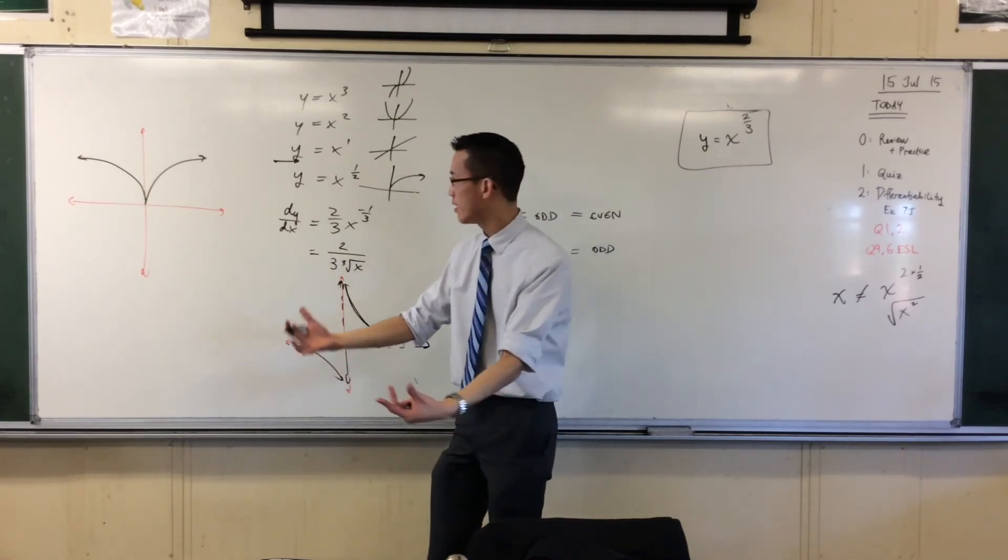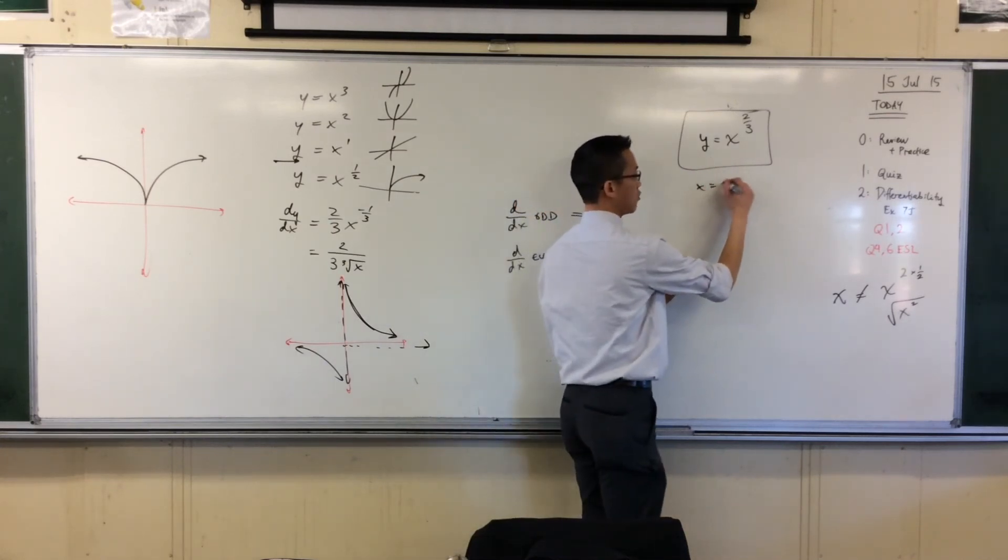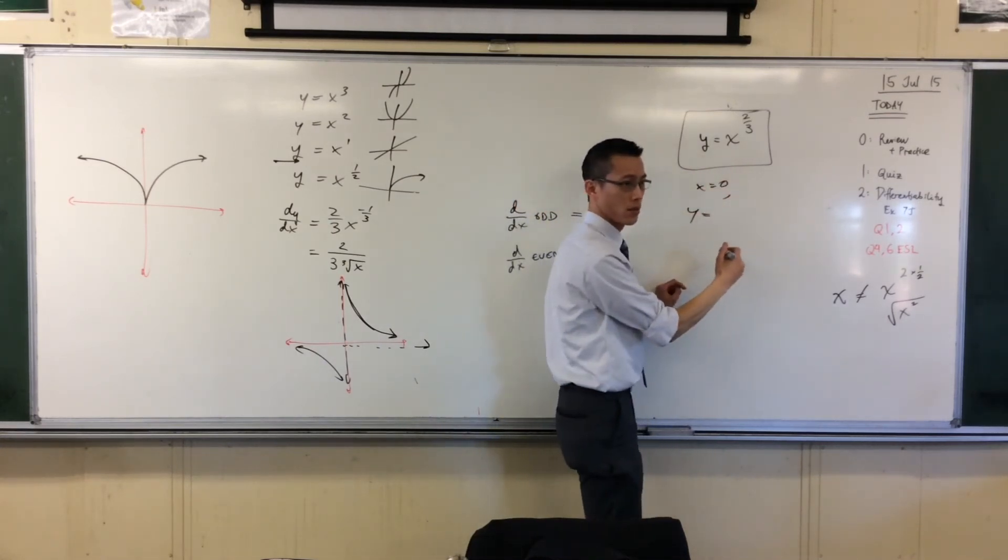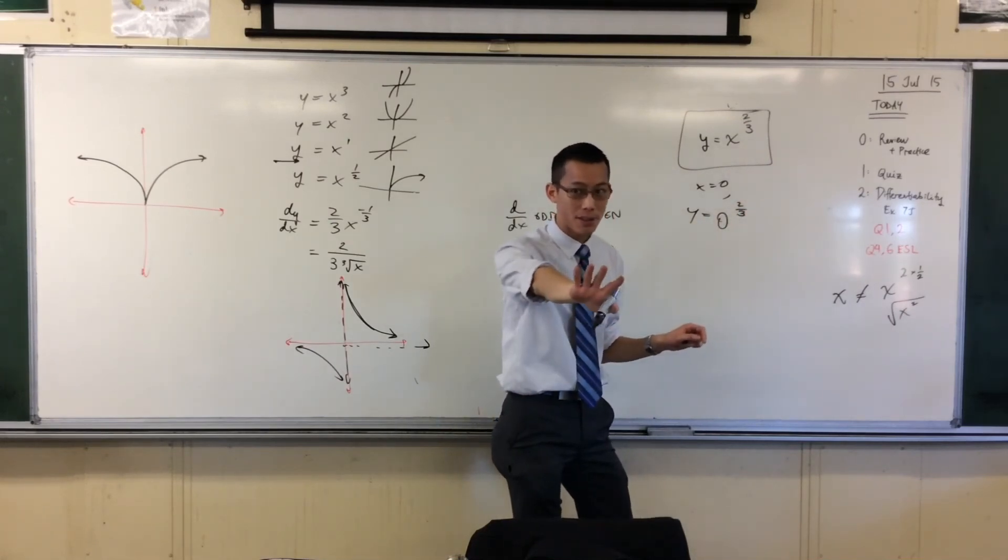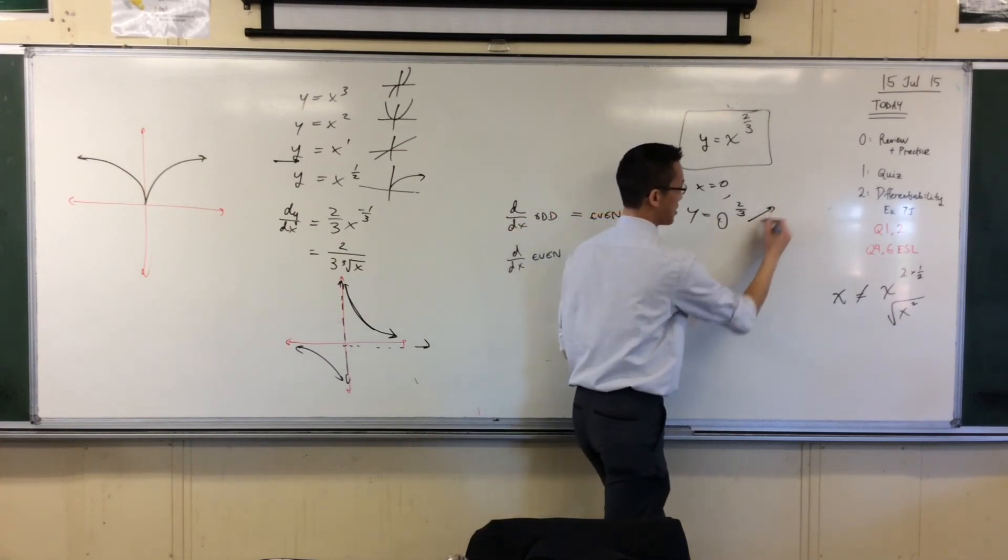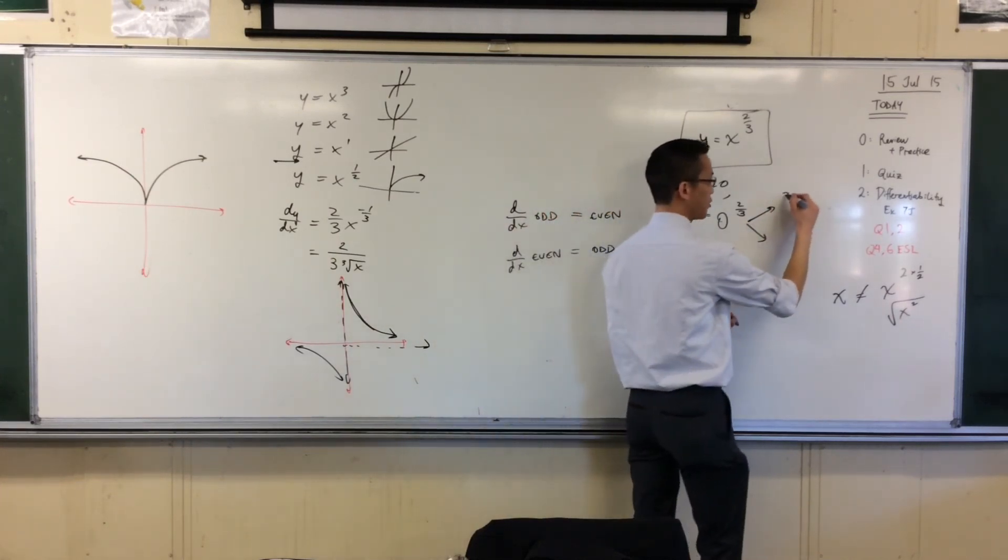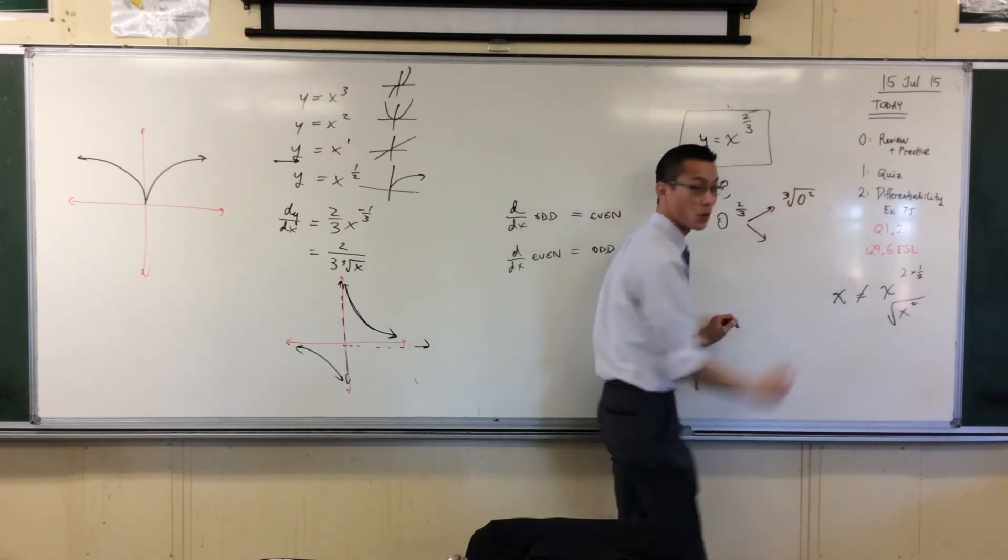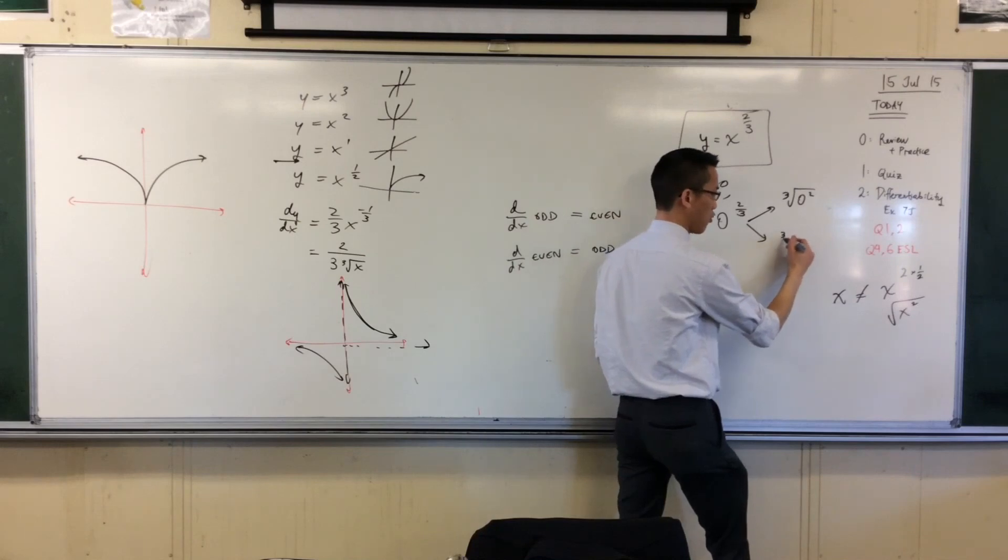But can I put in, can I put in x equals 0 into this? X equals 0, so y equals 0 to the power of 2 thirds. Now, you can do this any way you like, right? You can either say, okay, because this is the question we had before, which order do I do it in? Am I doing the cube root of 0 squared?